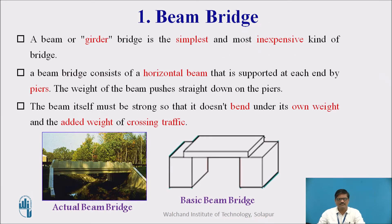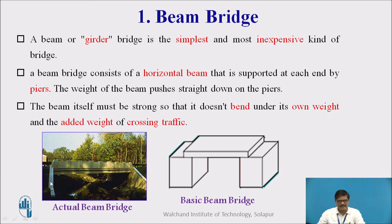Let us discuss about the first type: the beam bridge. A beam or a girder bridge is the simplest and the most inexpensive kind of bridge. A beam bridge consists of a horizontal beam supported at each end either by piers or abutments. The beam itself must be very strong to carry the load and it should not bend under its self-weight and the additional superimposed load.